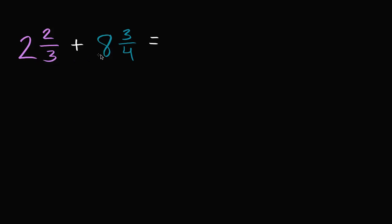We have here two and two-thirds plus eight and three-fourths. I encourage you to pause the video and see if you can compute what this is. Now let's work through this together. There's a bunch of ways that you can tackle this. I'll do it in a couple of different ways. One way is to just rewrite this expression: two and two-thirds plus eight and three-fourths.